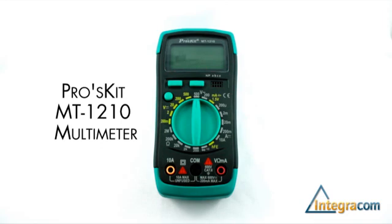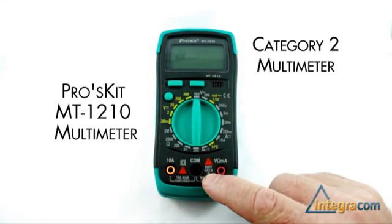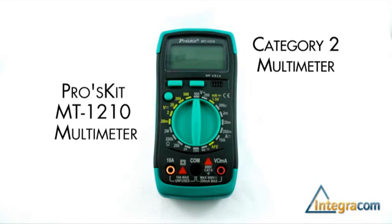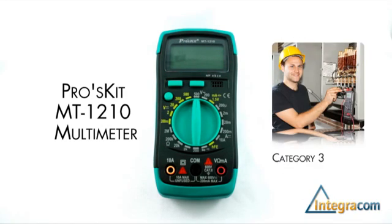All trade quality meters have a category rating. This meter is category 2, which is sufficient for the type of work performed in the telecommunications industry. Electricians might use a category 3 or 4 meter as they use higher voltages.